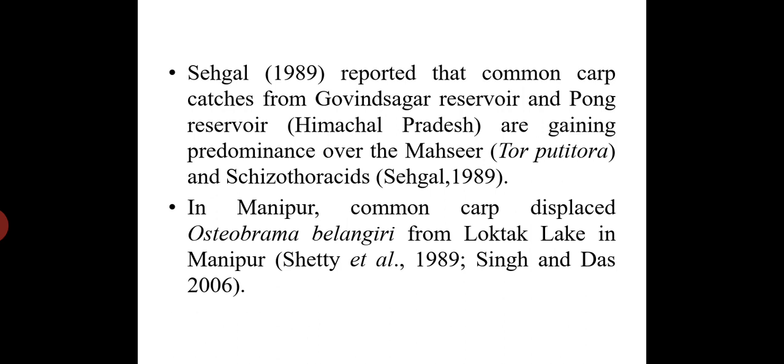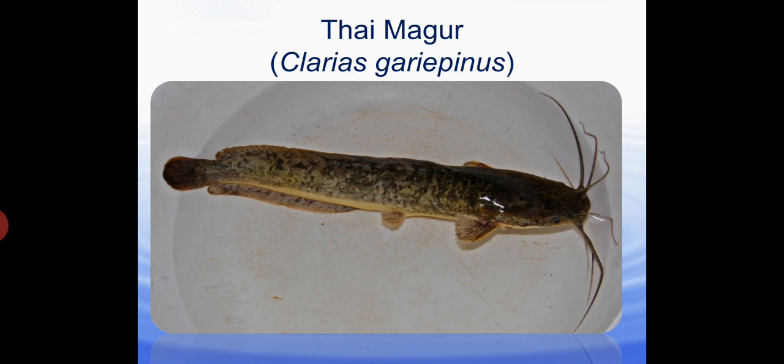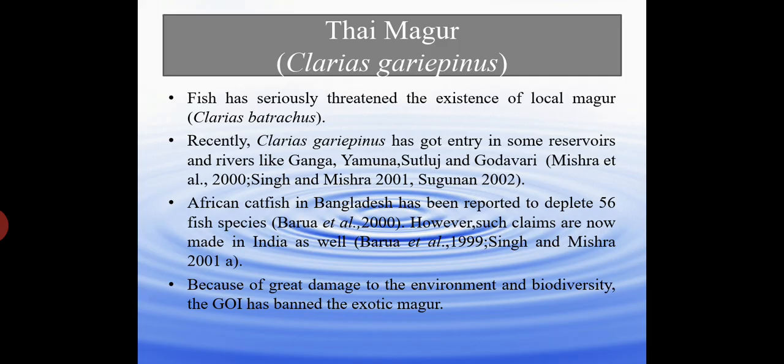Sehgal reported that Common Carp catches from Gobind Sagar and Pong Reservoirs are gaining predominance over Mahseer and Schizothoracids. In Manipur, Common Carp displaced Osteobrama belangeri from Loktak Lake. The next fish is Clarias gariepinus, commonly known as Thai Magur or African Magur. This fish has seriously threatened the existence of local Magur — Clarias batrachus. It has got into reservoirs and rivers like Ganga, Yamuna, Sutlej, and Godavari. African catfish in Bangladesh has been reported to deplete 56 fish species. Due to great damage to the environment and biodiversity, the Government of India has banned this fish.